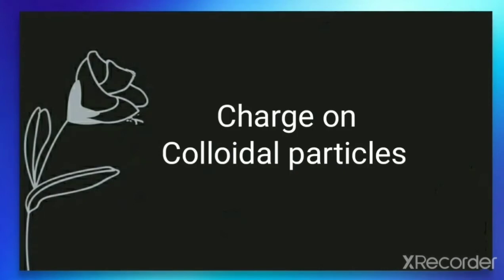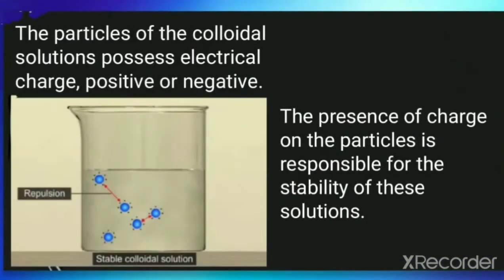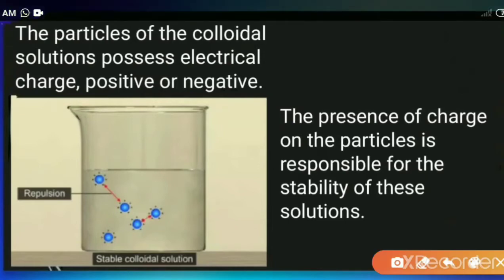As we know, colloidal solutions are quite stable — that means they do not undergo precipitation, or we can say coagulation, unless we add an electrolyte. One reason for stability, which we have already discussed, is the stirring effect in Brownian motion. The other reason for stability is that the particles are actually in repulsion — the particles are undergoing repulsion, so they will not come closer and will not get precipitated.